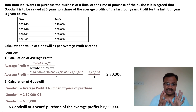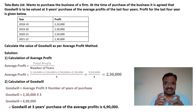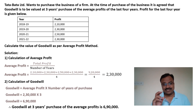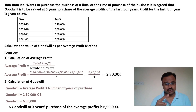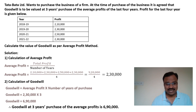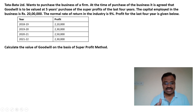I hope you understood the two steps. This method is very easy — you calculate goodwill in just two steps: first calculate the average profit, then calculate the amount of goodwill. Now let us solve the same question as per the super profit method.